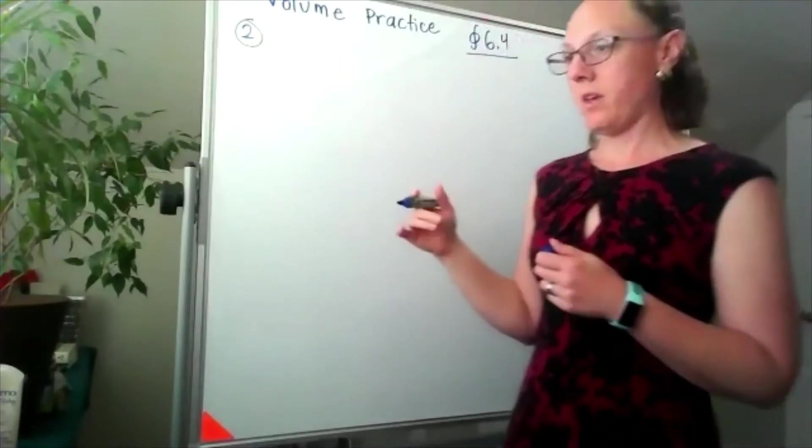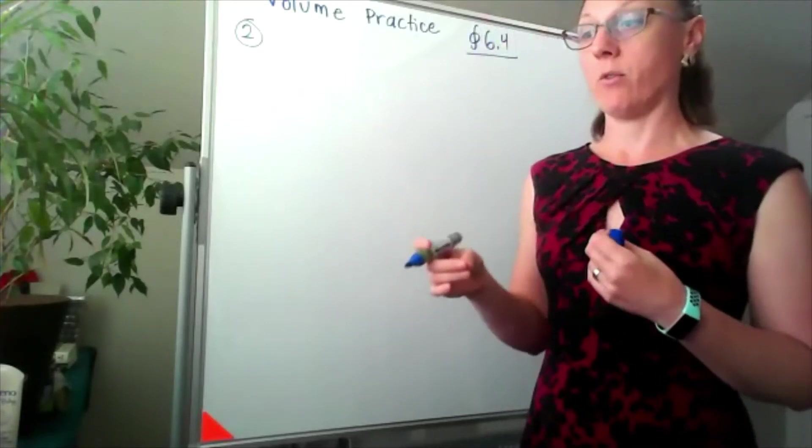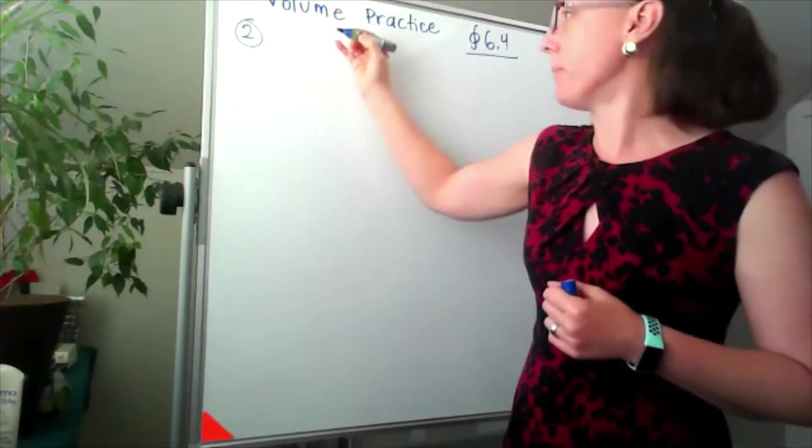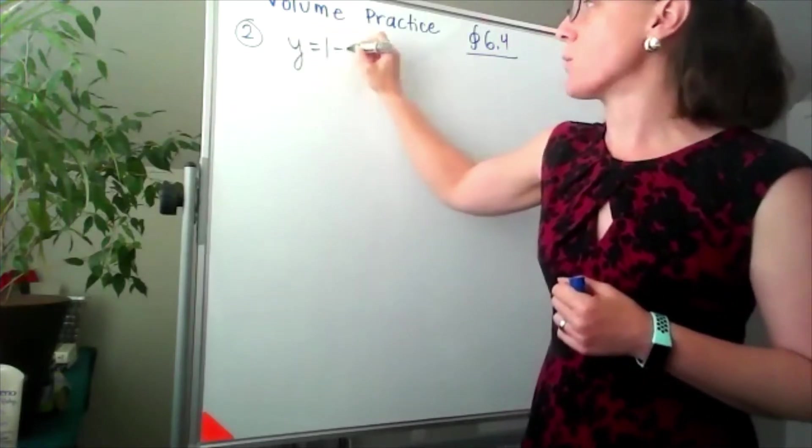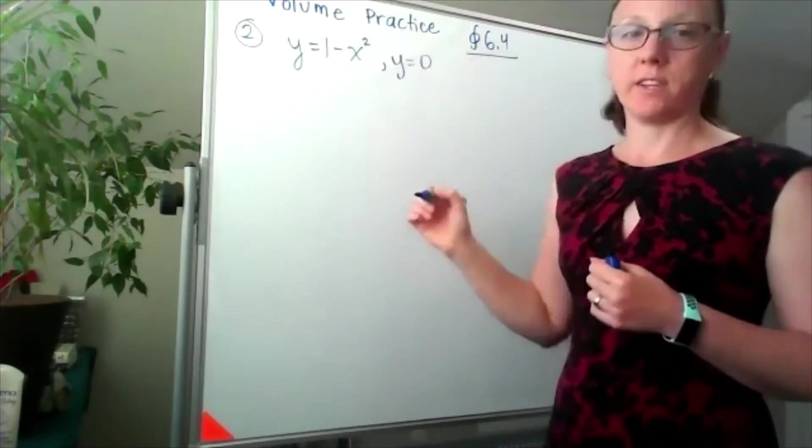Number two, for this problem we're going to rotate the region around the x-axis. The region that we're talking about is bounded by y equals 1 minus x squared and y equals 0.